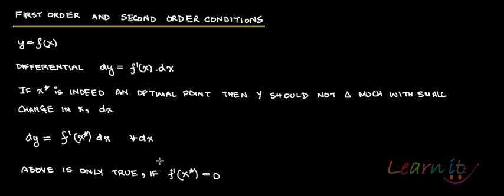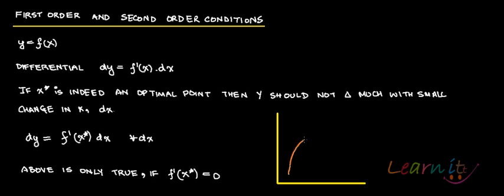The point is that if x star is indeed the maximum or optimal point, then y shouldn't be changing much with a small change in x. Let's talk about the geometric interpretation first. If you have a function where the slope is positive, the slope of this function is positive.